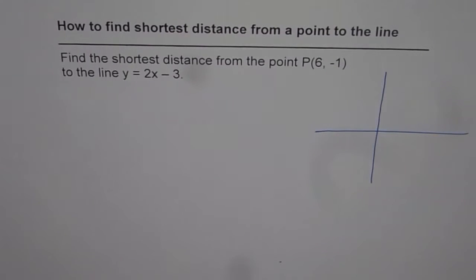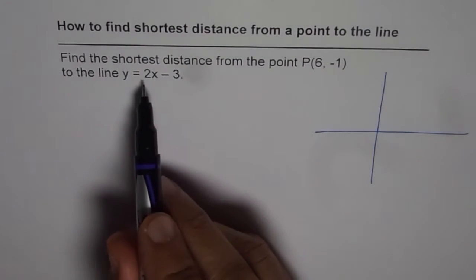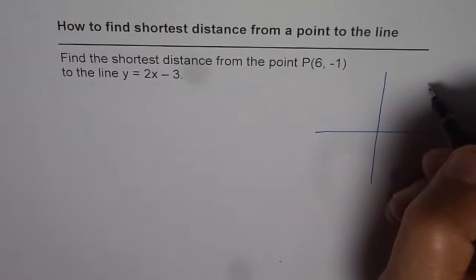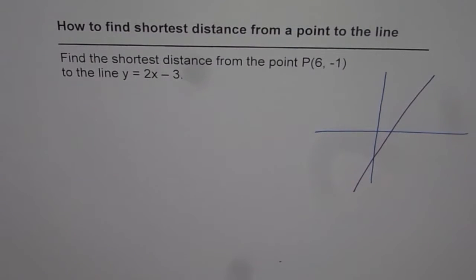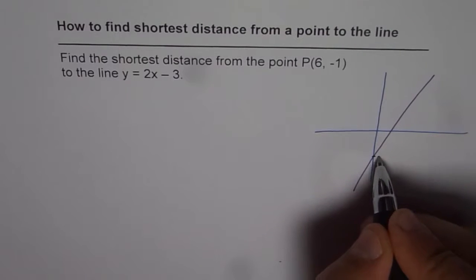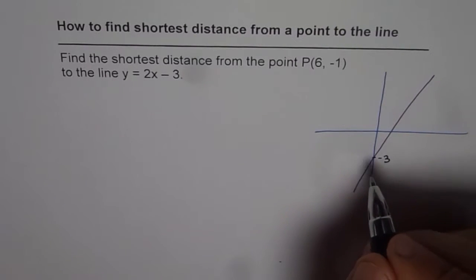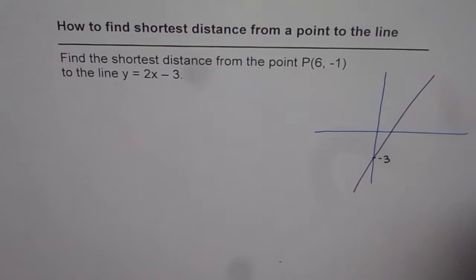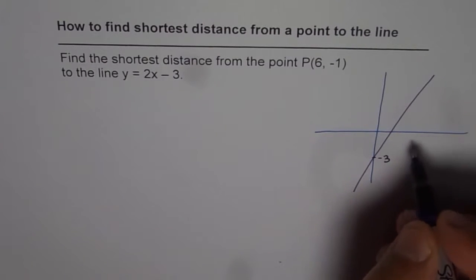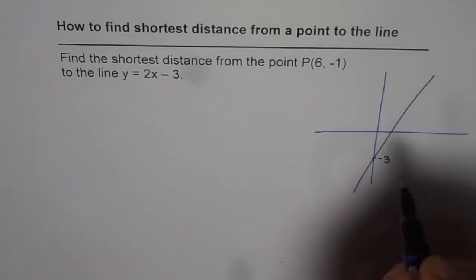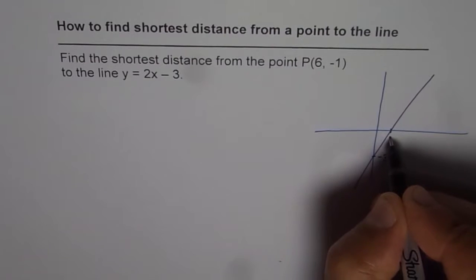We have been given the line y = 2x – 3, which means the y-intercept is –3 and the slope is 2, so it is a line kind of like this. This line passes through y-intercept –3 with slope 2. Now, if y is 0, the x-intercept is at 1.5, so that point is at about 1.5.